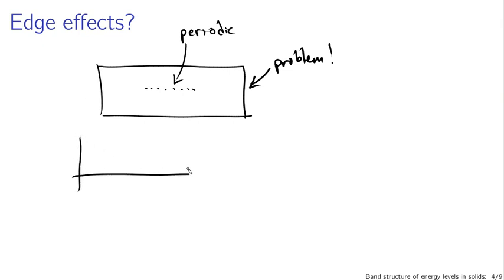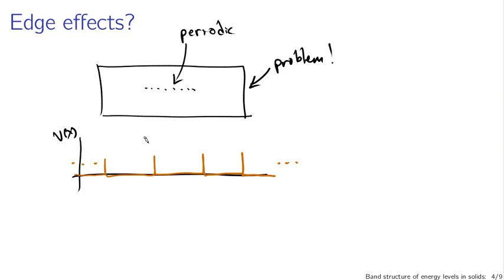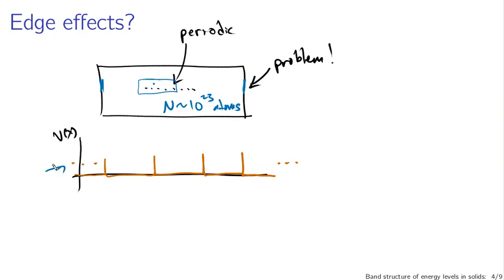Our potential V(x) is this Dirac comb structure that potentially continues to infinity. If we're working with a realistic material, we're going to have something like 10^23 atoms, so a free electron would be much more sensitive to the atoms nearby than to the boundaries. As such, you wouldn't expect the edge effects to be terribly significant. One way to fix Bloch's theorem — if we're willing to ignore edge effects and deal with electrons near the interior — is to take our delta function potential and wrap it around, treating the edges as connected: wrapping the material around in a circle, working with a donut of material instead of a block.